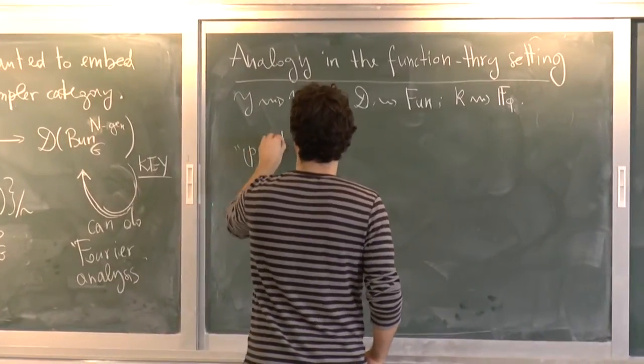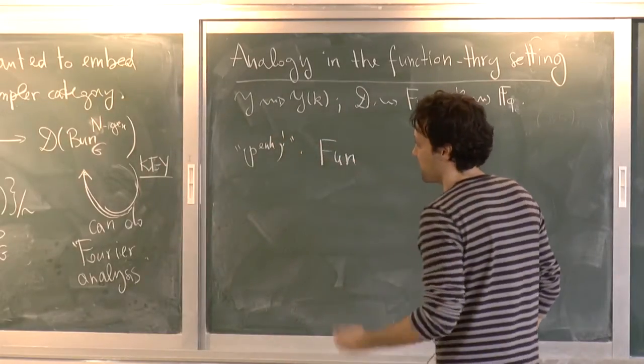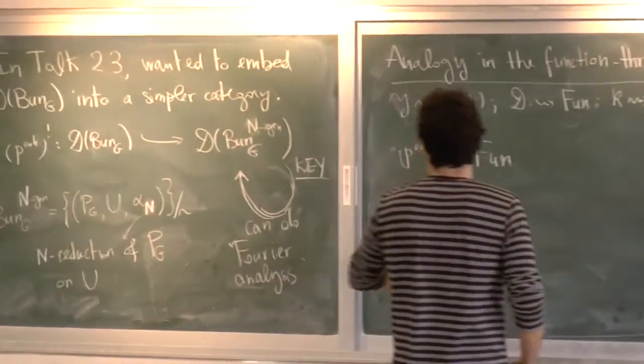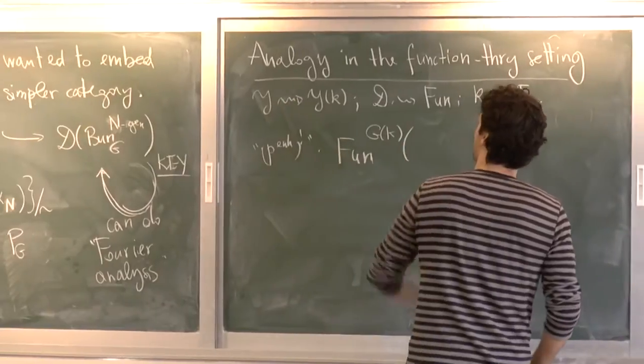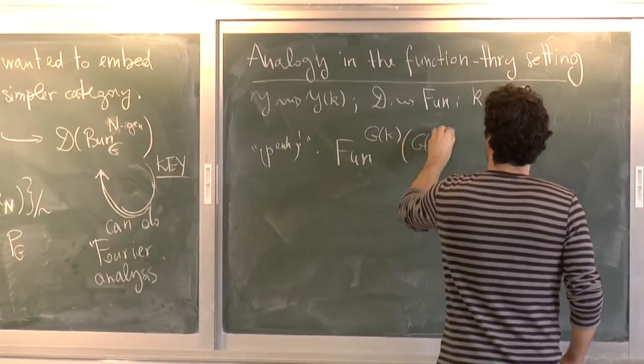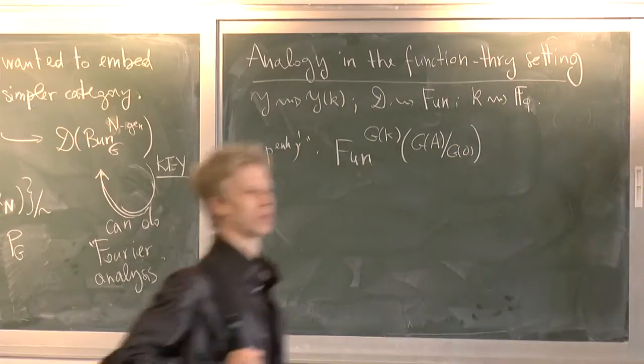So P enhanced pullback. As you can see, as we saw last time, this is the vector space of automorphic functions. So G of K invariant functions on G of A mod G of O.